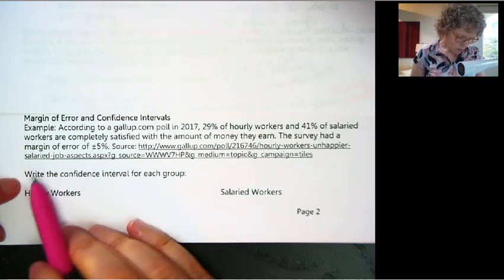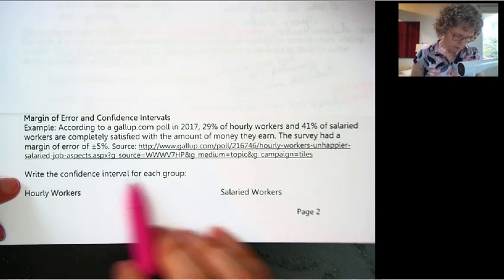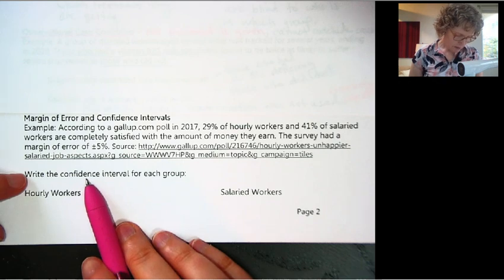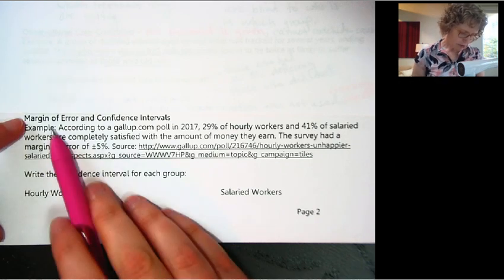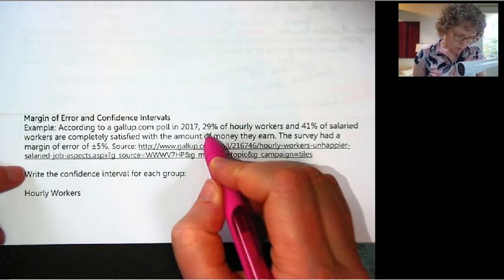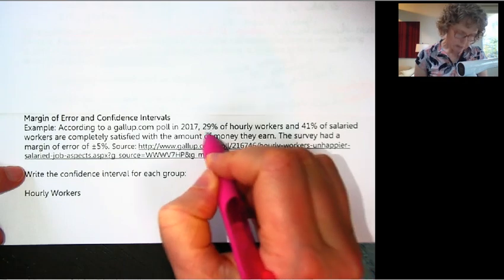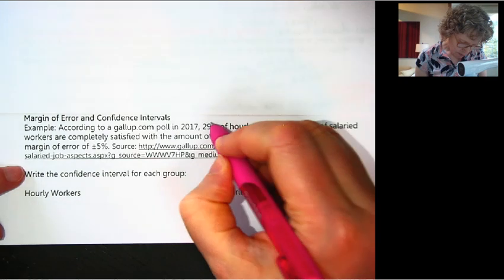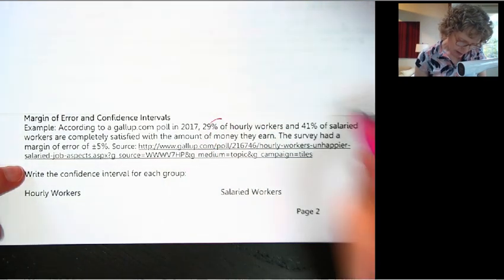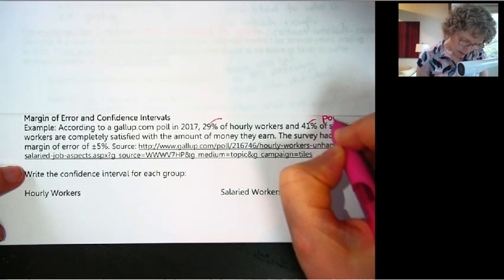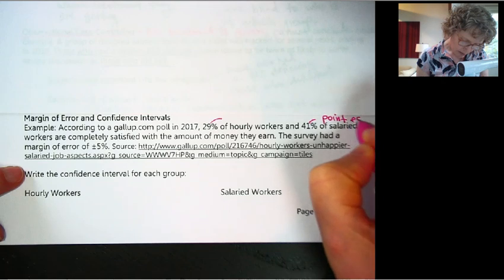So we want to write the confidence interval for this group. The confidence interval is related to margin of error. So mostly in the media, what you see are called point estimates. This 29% and the 41% are called point estimates.